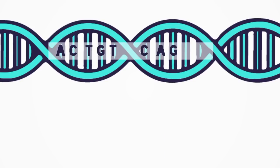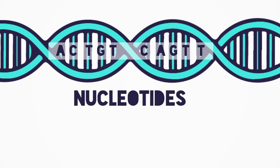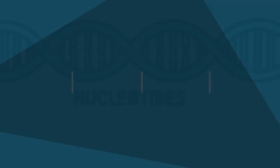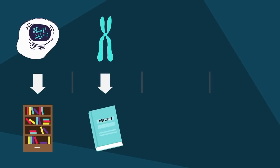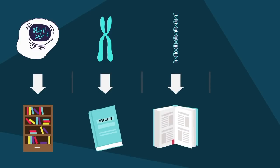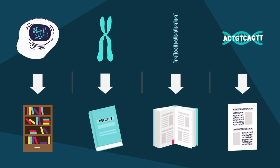Genes are made up of an alphabet of four letters we call nucleotides. An easy way to remember this is that every cell has its own library of information — of recipe books. Every chromosome is a recipe book, and every gene on those chromosomes is like the recipes inside of a book, whereas the nucleotides are like the letters on the pages of the recipes.